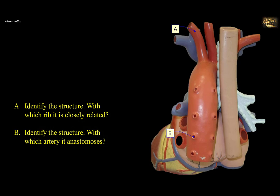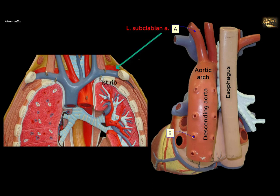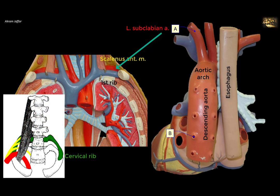Identify the structure and with which rib it is closely related, and with which artery it anastomoses. This is a posterior view of mediastinal structures and the heart, showing the esophagus, aortic arch, and descending aorta. Structure A is the third branch of the aortic arch — the left subclavian artery — which is related to the superior surface of the first rib, posterior to the attachment of scalenus anterior, accompanied by the lower trunk of the brachial plexus. The artery can be compressed when there is an extra cervical rib, causing neurovascular symptoms in the upper limb.